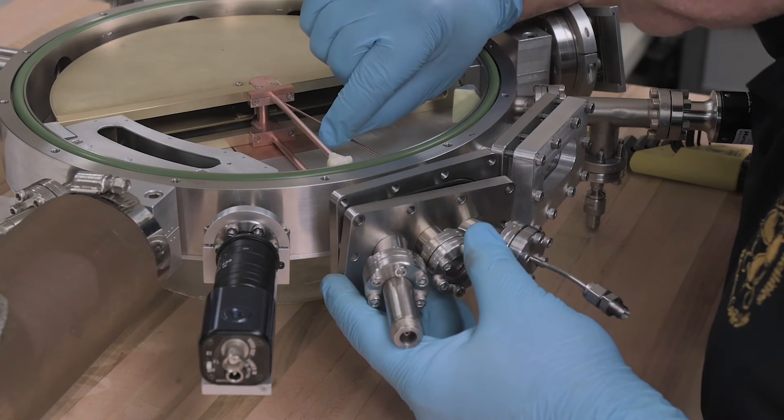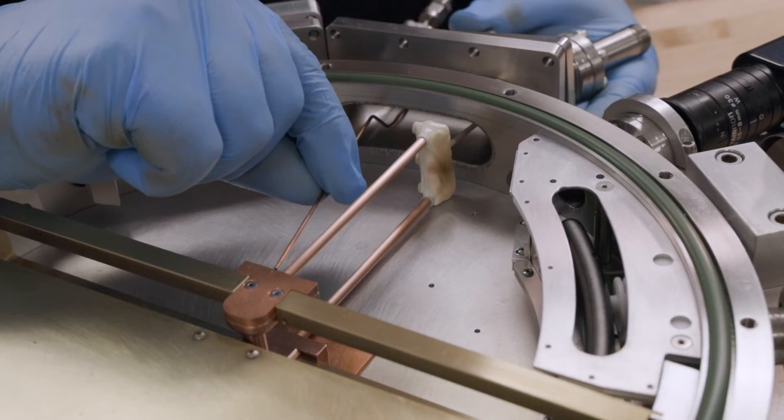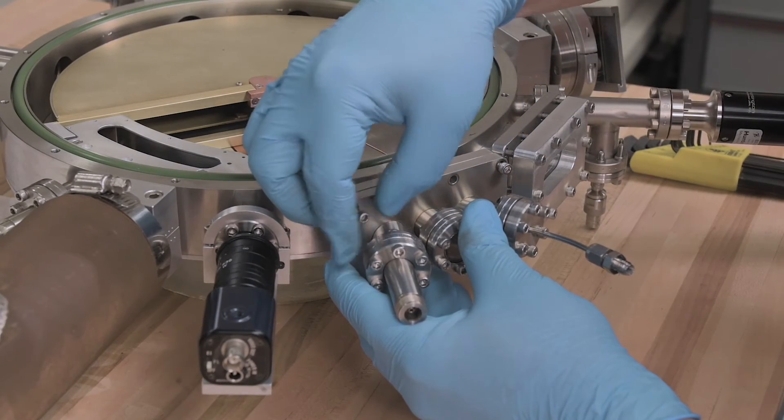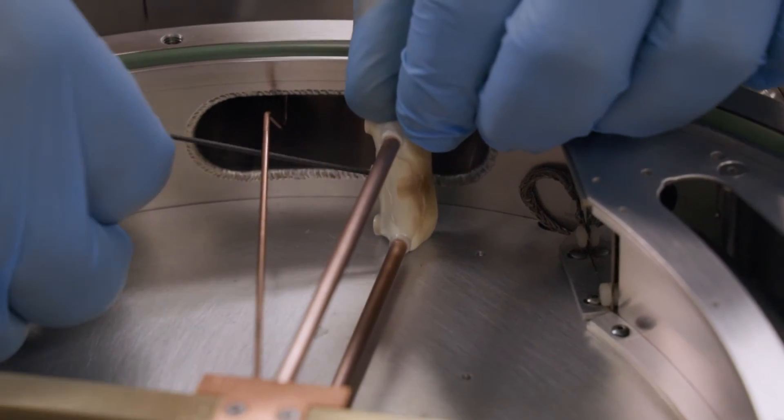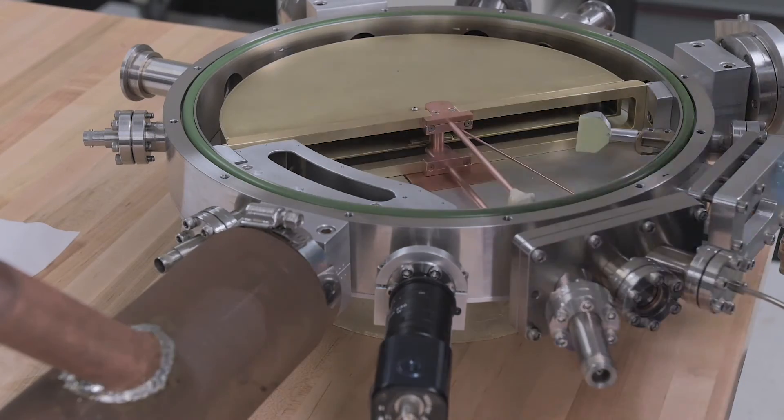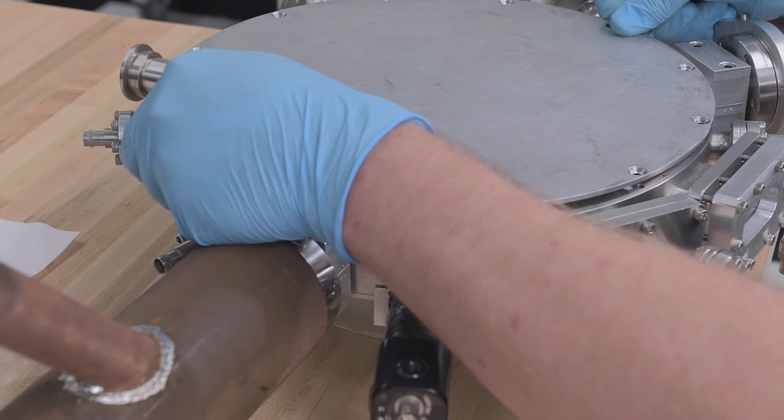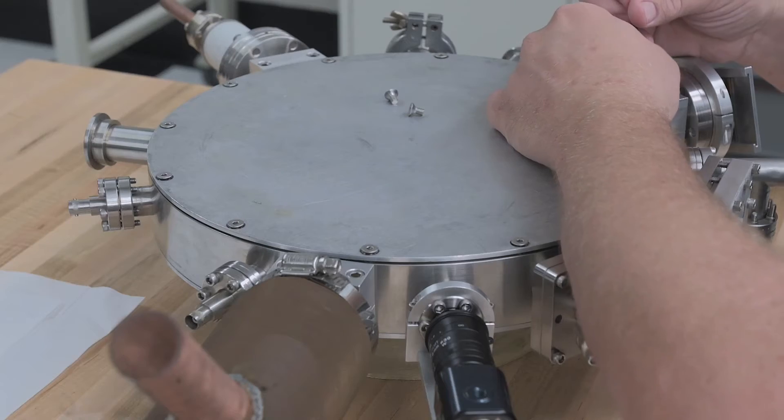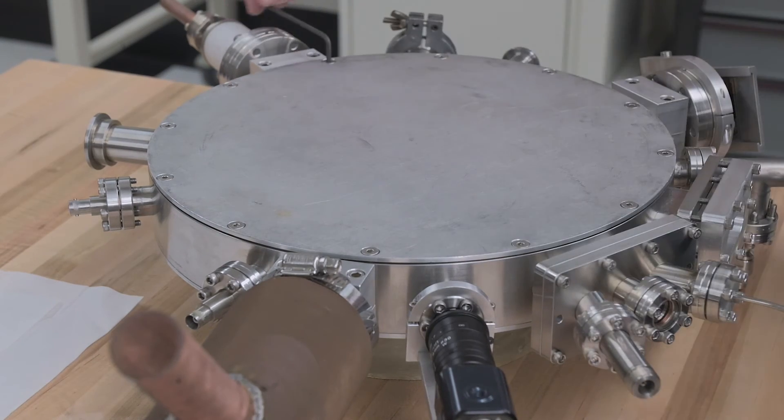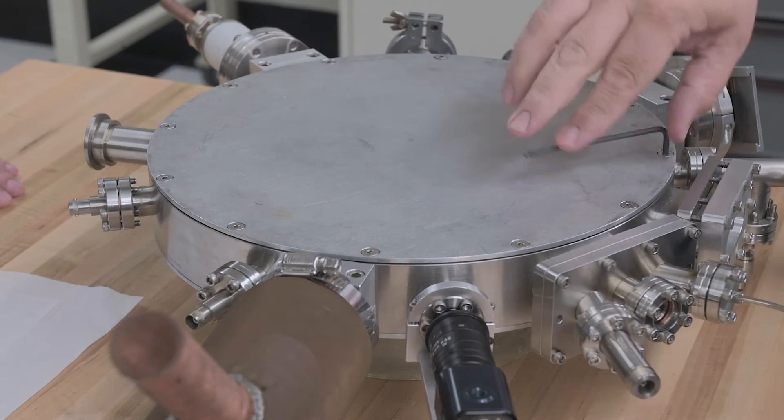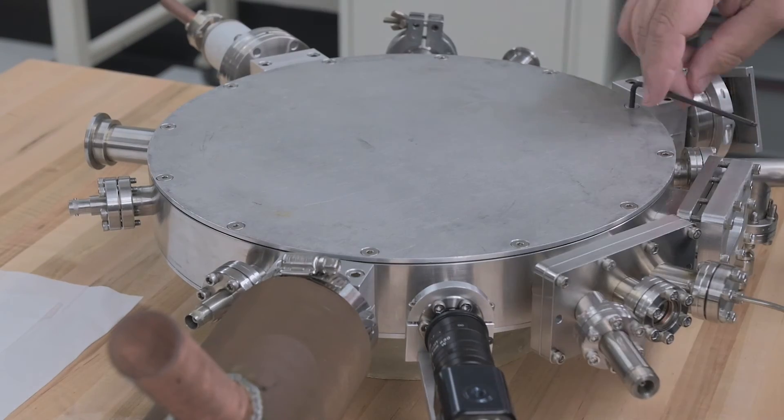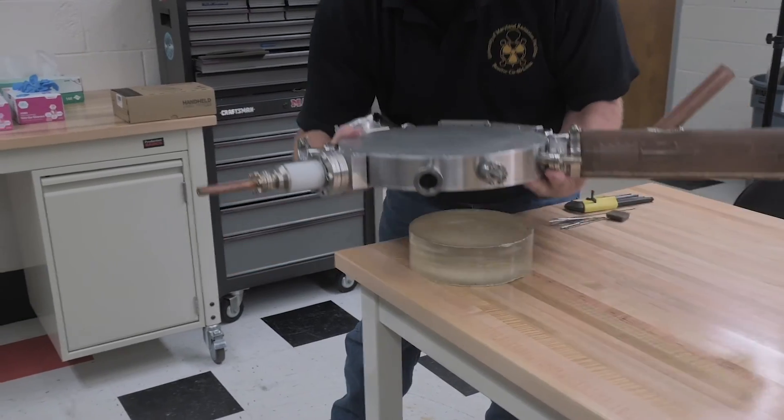I perform one final check to ensure the cathodes have not shifted and become shorted to ground. We seal up the chamber by properly using a star pattern tightening technique, then carry the chamber over and place it into the magnet's gap.